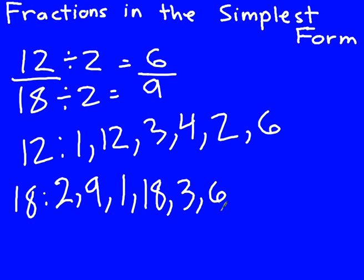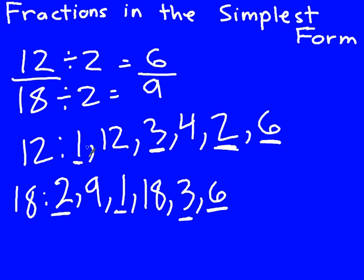Let's go through and figure out which ones are common — factors of both 12 and 18. 1 is one, 3 is one, 6 is one, and 2 is one as well. Of all these common factors, which one is the greatest factor in common between 12 and 18? Six.